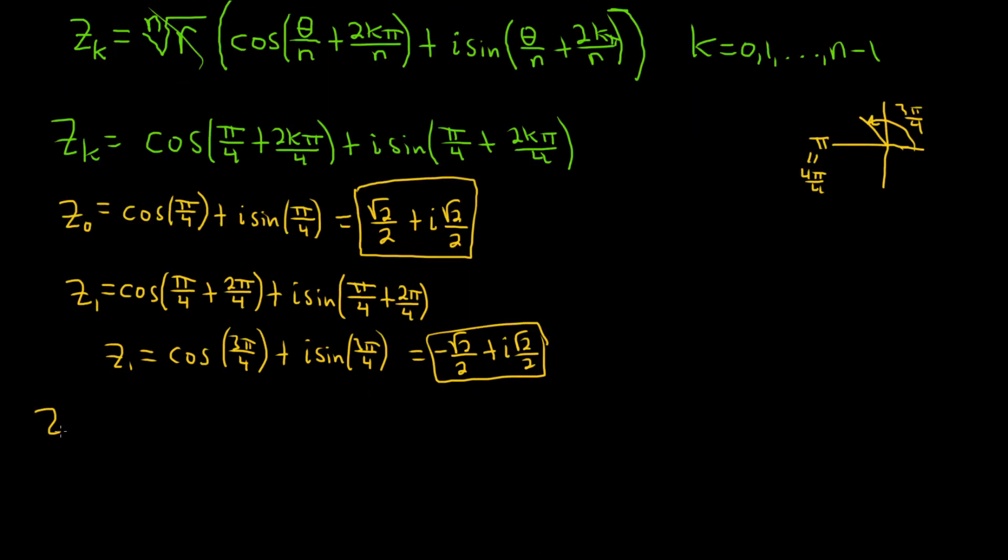z sub 2. So it would be cosine - let's skip a step here. So when we're plugging in 2 here, we're going to get pi over 4 plus 4 pi over 4. So that's going to be 5 pi over 4. So this is going to be the cosine of 5 pi over 4, just to save some time,